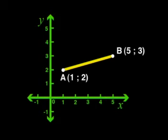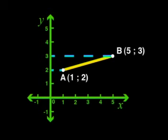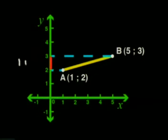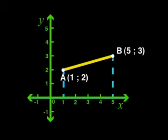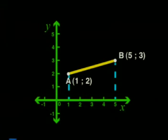Now let's look at this line segment. We can see that as we move from left to right, the y values increase. What we need to work out is by how much the y values increase. The y value at A is 2 and the y value at B is 3, so the difference will be 1 unit up the y-axis. Now that we know how much the y values have changed, we must calculate the difference in the x values. The x value at A is 1 and the x value at B is 5, so the difference will be 4 — a distance of 4 units on the Cartesian plane.